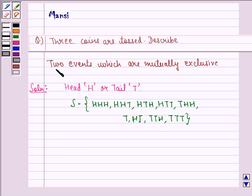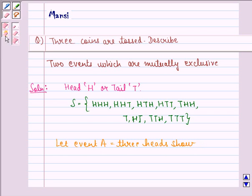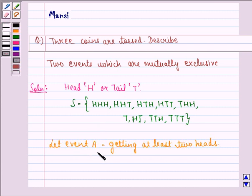Now, we have to find 2 events which are mutually exclusive. Let event A be getting at least 2 heads.